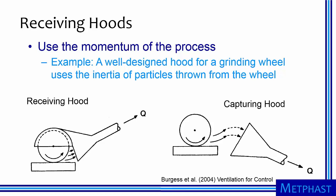The third type of hoods are receiving hoods. Receiving hoods use the momentum of the process to improve capture efficiency over other types of hoods. Here, we will consider a grinding wheel that throws particle contaminants with high inertia into the air. High efficiencies at low air flows can be achieved with a receiving hood aligned with the typical trajectory of particles thrown from the grinding wheel. In contrast, a capturing hood not aligned with the inertia of the particles is a poor choice because of the high velocities required to achieve high capture efficiency.